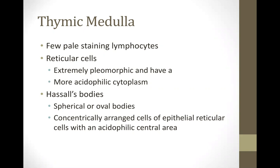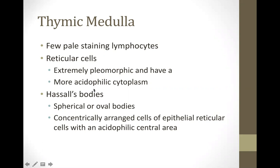At the thymic medulla, please take note — this will definitely be asked in the practical and theoretical exams — the characteristic structure is Hassall's bodies, also known as Hassall's corpuscles or thymic corpuscles. These are synonyms. Hassall's bodies or corpuscles are spherical or oval bodies of concentrically arranged epithelioreticular cells with an acidophilic central area. This structure is only found at the thymic medulla.